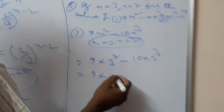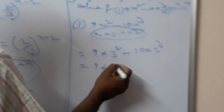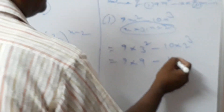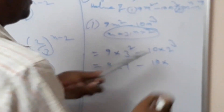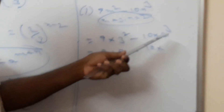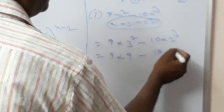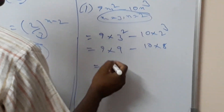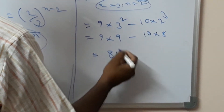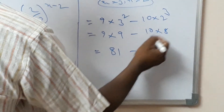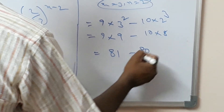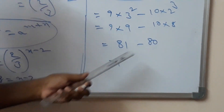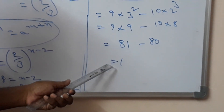Calculate: 9 into 3 squared, which is 9 into 9, equals 81. Then 10 into 2 cubed, which is 10 into 2 into 2 into 2, equals 10 into 8, which is 80. So 81 minus 80 is equal to 1.